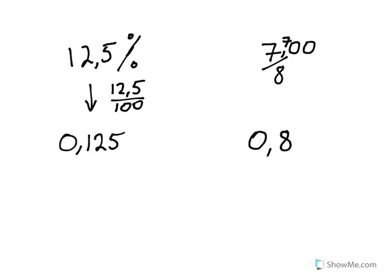70 minus 64 is 6, so there's 6 left over. 8 into 60 - 7 times 8 is 56, so there's 4 left over. 8 into 40 goes 5 times. So we now have two decimal numbers, 0.125 and 0.875, and now we can find the average.